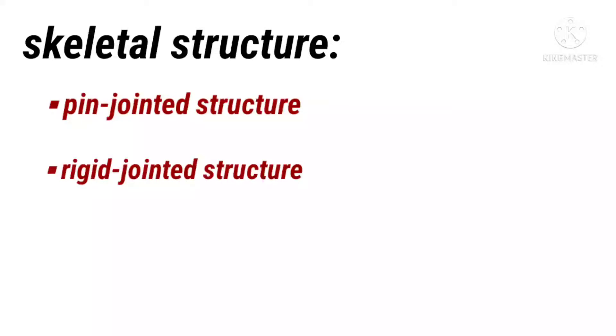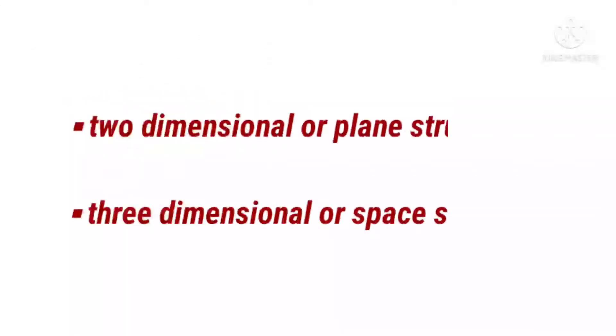Skeletal structures may also be classified into either two-dimensional or plane structure—that is, a structure having all its members in one plane is called a plane structure or frame. Next, three-dimensional or space structure—a structure having members in three dimensions is called a space structure or frame.